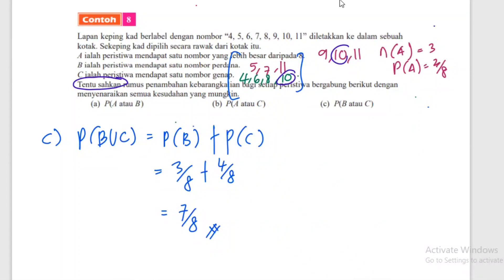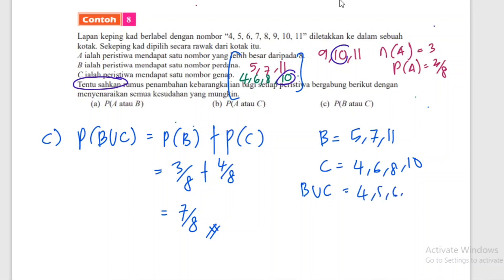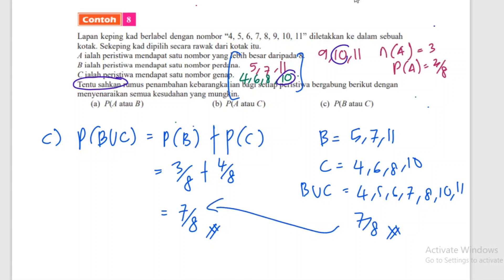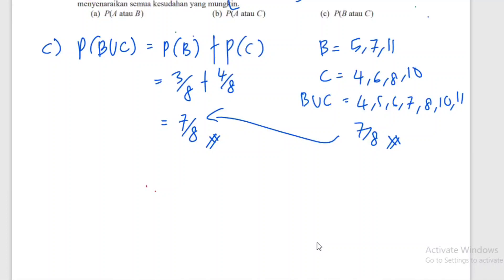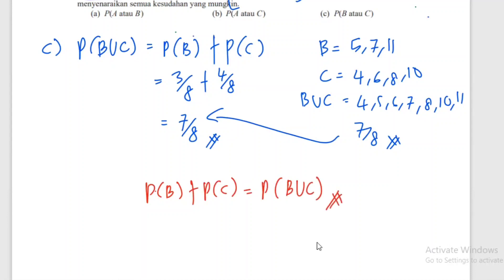Kita buktikan: B = {5,7,11}, C = {4,6,8,10}. B union C = {4,5,6,7,8,10,11} - ada 7 unsur. Kebarangkalian = 7/8. Terbukti - kebarangkalian B tambah kebarangkalian C sama dengan kebarangkalian B union C.